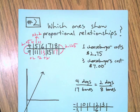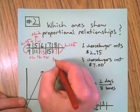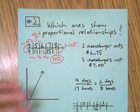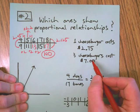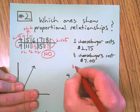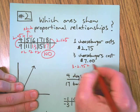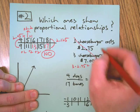This one's a little easier - one cheeseburger. If this were the same, this would be three times 275, which is 825, so this is a no. This is not proportional.